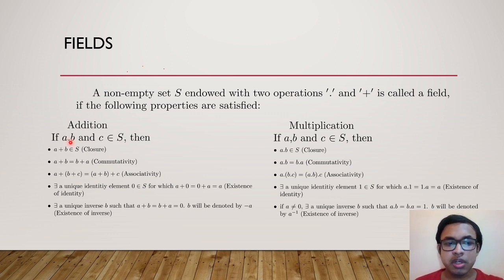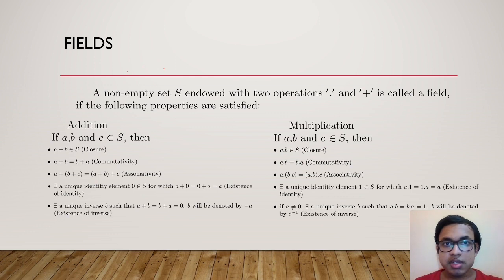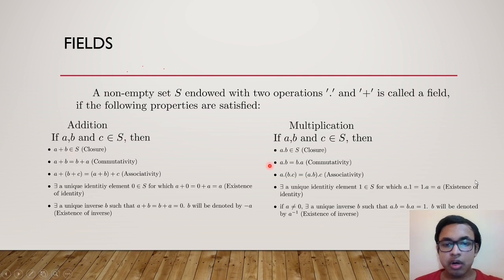The first properties are the closure law. If a and b are in S, then a plus b has to be in S. Similarly if a and b are in S then a dot b has to be in S. Next we have commutativity, which says that if a and b are in S then a plus b is the same as b plus a. Similarly a dot b is the same as b dot a.